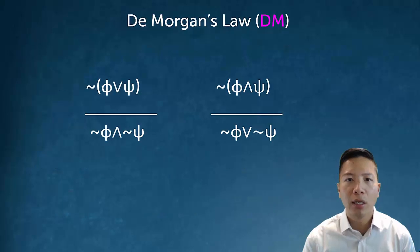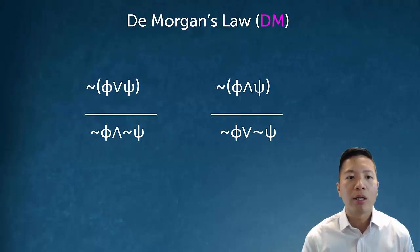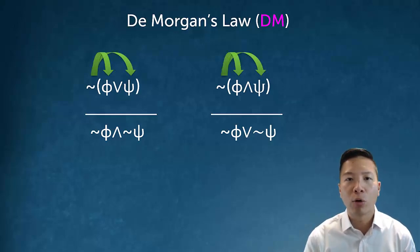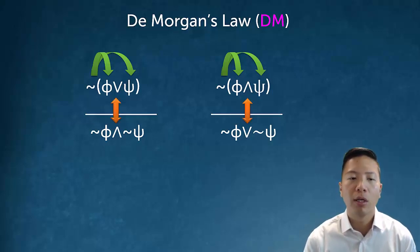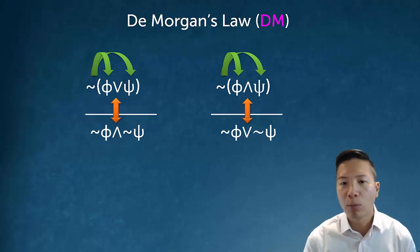So what does DeMorgan's actually say? DeMorgan's is very straightforward, and these are the two forms I'll focus on: the negation of a disjunction and the negation of a conjunction. DeMorgan's has a general pattern — we distribute the negations and then flip the main connective. So if I have the negation of phi or psi, I distribute the negation and change the sign to get not phi and not psi. Similarly, negation of phi and psi becomes not phi or not psi.